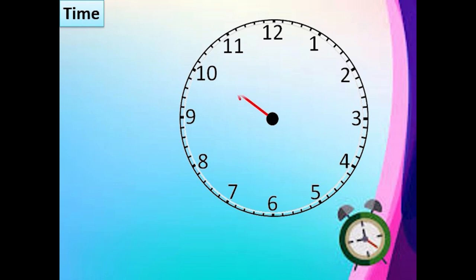Each division stands for a minute. A short hand shows you hours and the long hand shows you minutes. When the long hand is at 1, it is 5 minutes. When it is at 2, 10. At 3, 15. At 4, 20. At 5, 25.